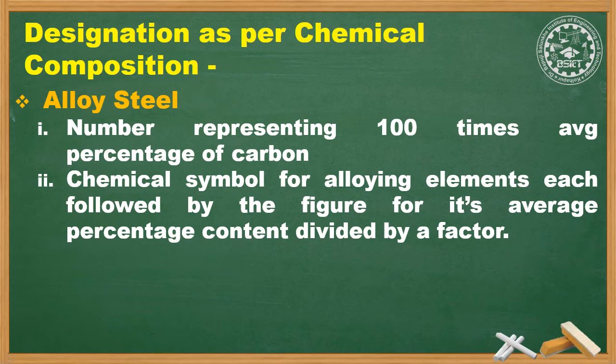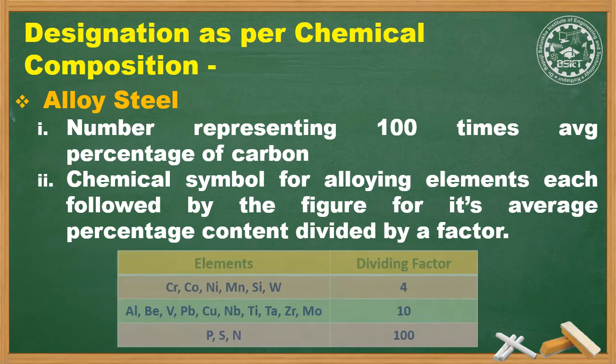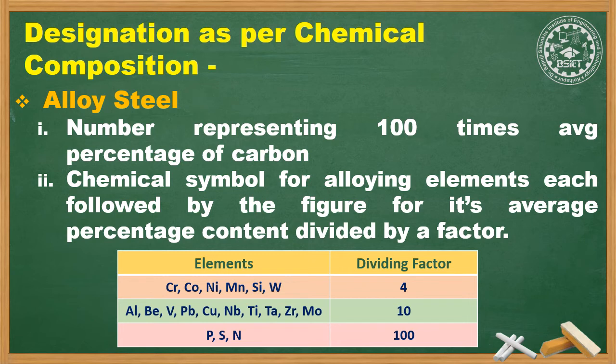For alloy steels, each alloying element is followed by a figure for its average percentage content divided by a specific factor. For chromium, cobalt, nickel, manganese, silicon, and tungsten (W), the dividing factor is 4. For aluminum, barium, vanadium, Pb, Cu, Nb, Ti, Ta, Zr, and molybdenum, the dividing factor is 10. For phosphorus, sulfur, and nitrogen (N), the dividing factor is 100.